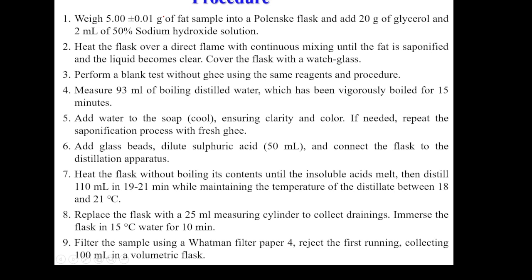The step-by-step procedure: First, take 5 grams of the fat sample in a Polenske flask and add 20 grams of glycerol — this increases density and prevents content from escaping during saponification. Then add 2 ml of 50% sodium hydroxide solution. Heat the flask directly over a flame with continuous mixing until the fat is saponified and the liquid becomes clear. Also perform a blank test without ghee using the same reagents and procedure.